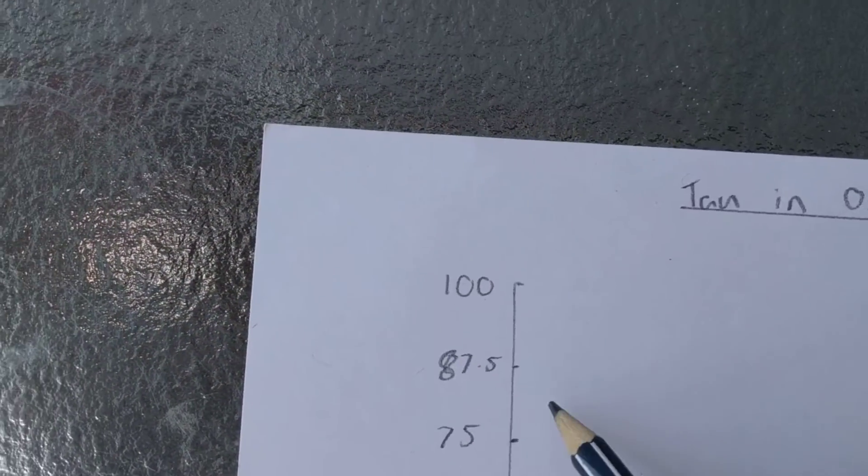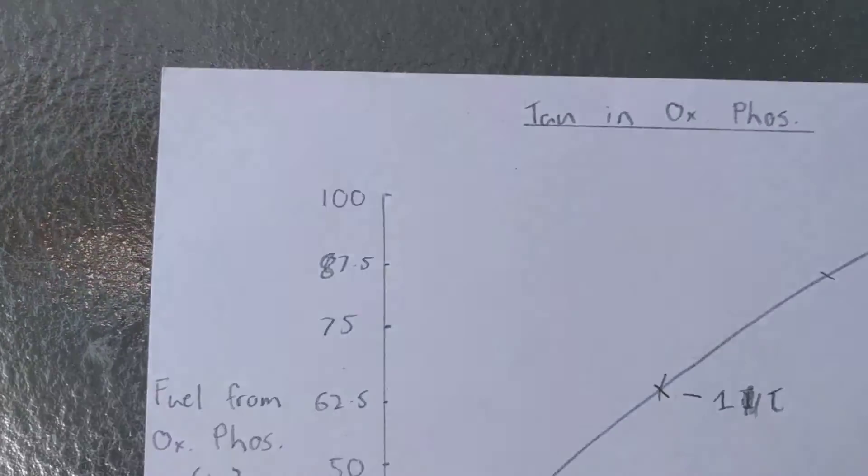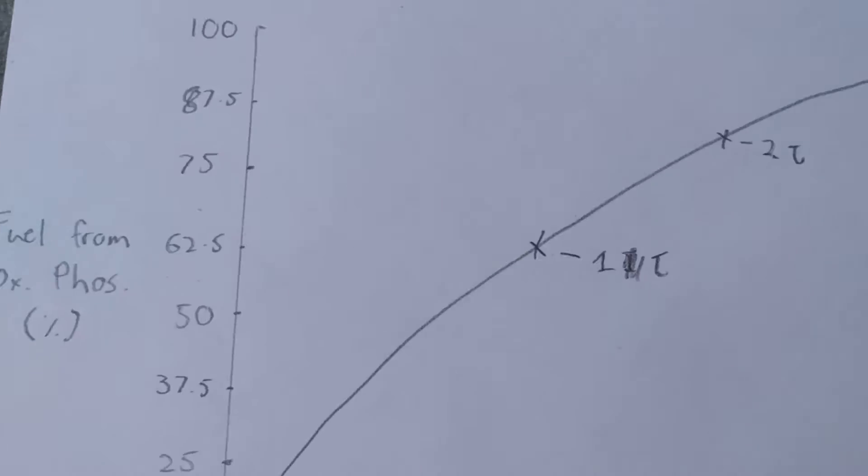So go across here to about there, and that is two tau.